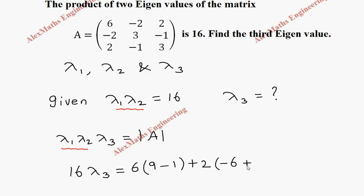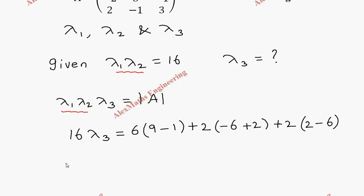The last element is 2, and when we expand this, this product is 2 minus and this product is 6. So totally 16 lambda 3 equals this is 8, 6 into 8 is 48.